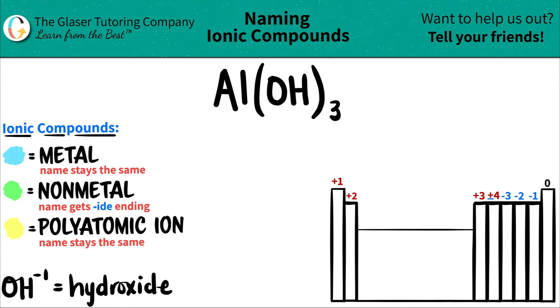So whenever you see you have an OH, that always has a negative one charge and that polyatomic is always called hydroxide. So here's the OH right here.